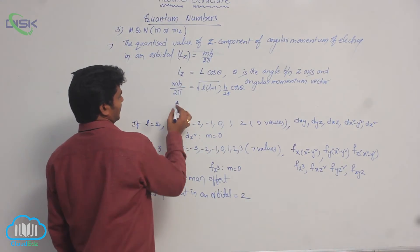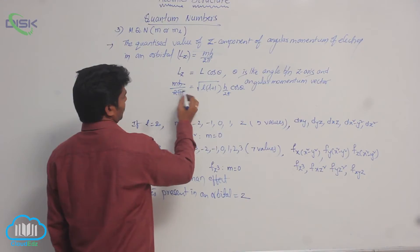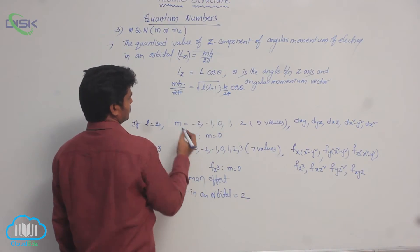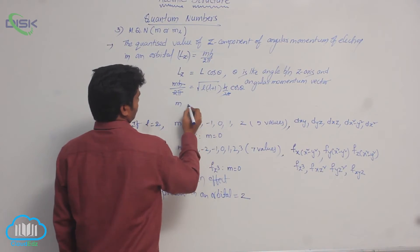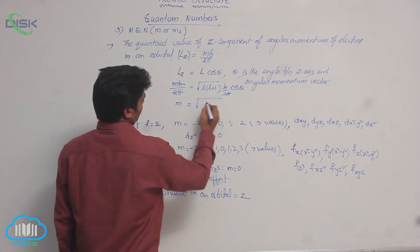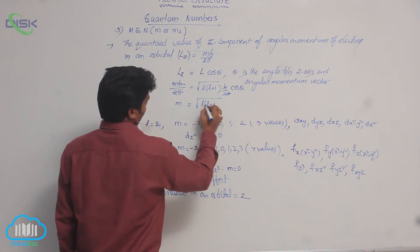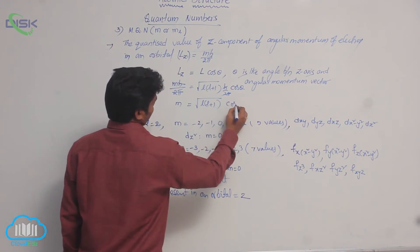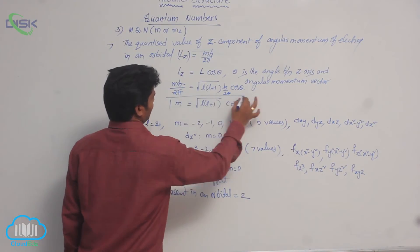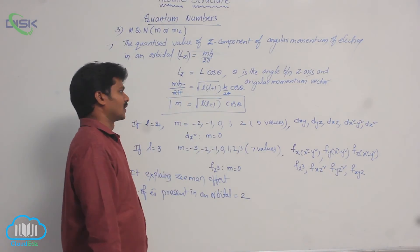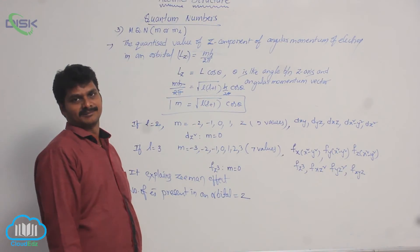Now, from both sides, h by 2 pi will be cancelled out. Then the resulting expression is m equal to square root of L into L plus 1 into cos theta. So, this is the expression between magnetic quantum number and azimuthal quantum number.